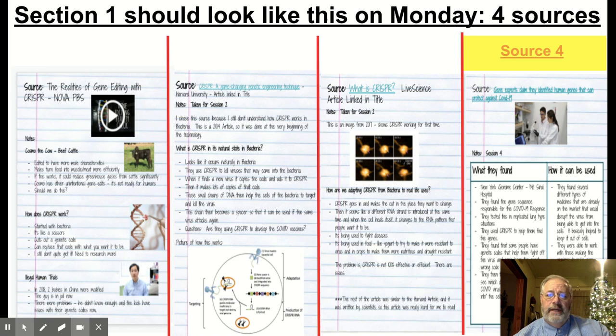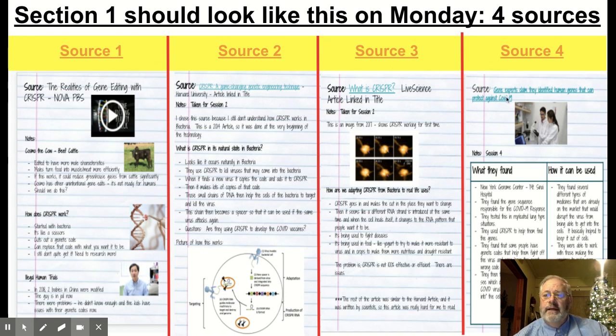So when we look at your book, I'll go ahead and click all those in there. We should have four sources, last Thursday, Friday, Monday, and Tuesday, and then today.